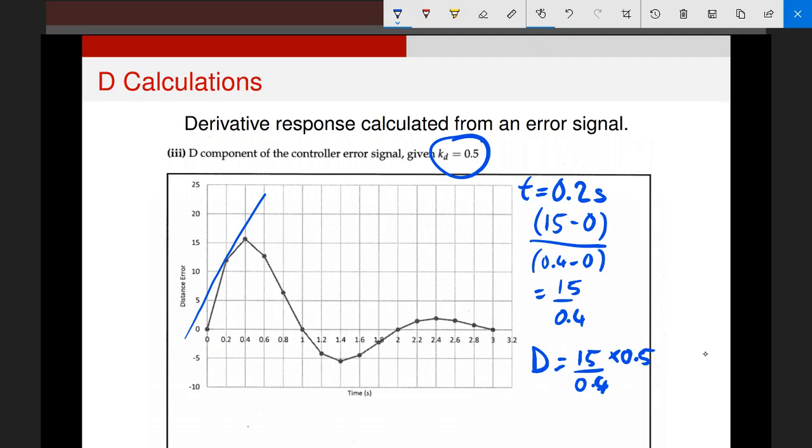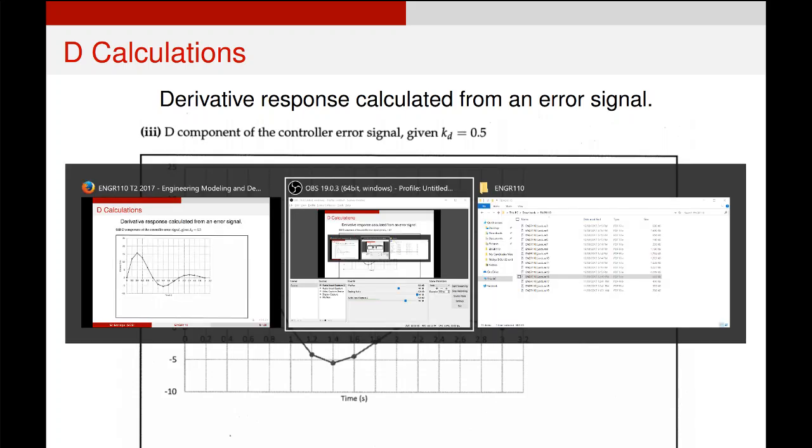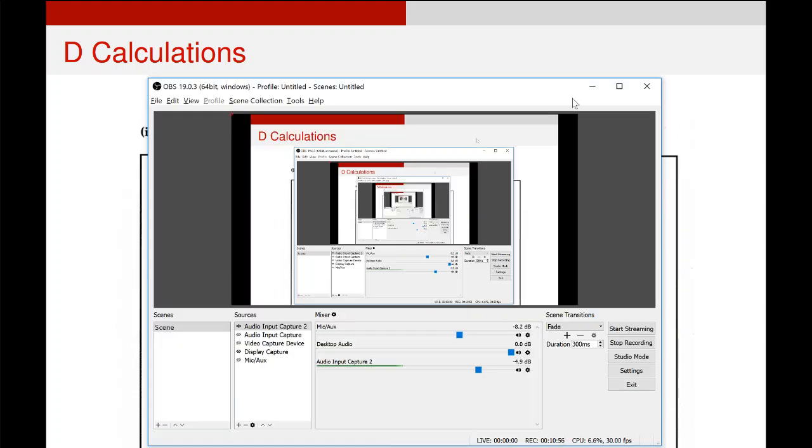Now, this all gets a little bit trickier if I'm getting this data in real time, because essentially, if I'm measuring at this point here, and I'm doing this in real time, I don't know what the error signal is going to be there. So, in that case, instead of taking the points on either side, I take my current value and the previous value, difference between them, exactly the same process, and I calculate my derivative based off of that.